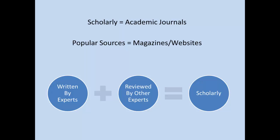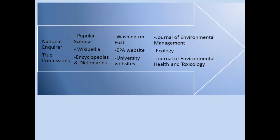In contrast, popular sources are magazines and websites that do not undergo a review process. There is a broad range of resources available to you. At the far left-hand side, we have sensational sources such as the National Enquirer. Then there are popular sources, including magazines such as Popular Science and Good Housekeeping, as well as online websites such as Wikipedia, encyclopedias, and dictionaries. These sources should never be used for our classroom assignments because they are not reputable.